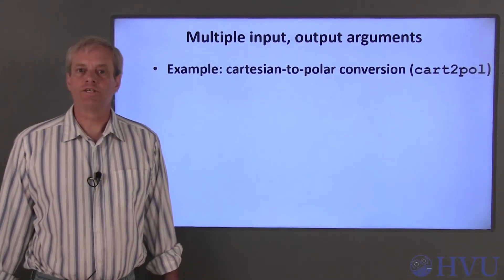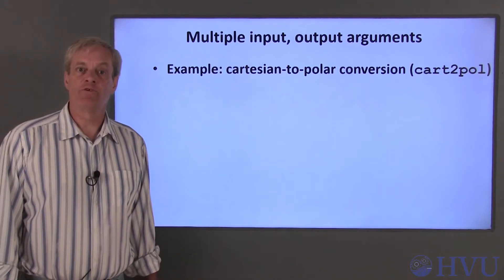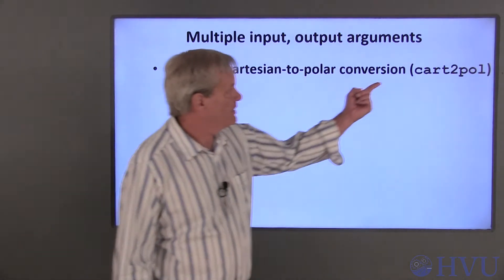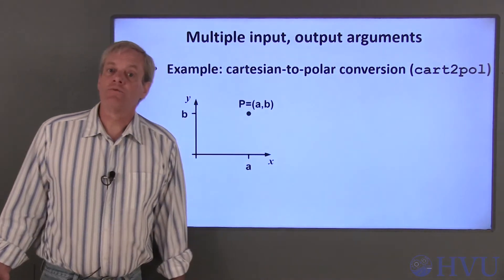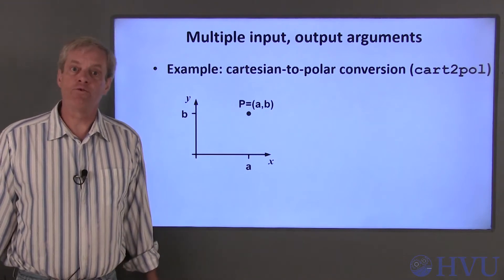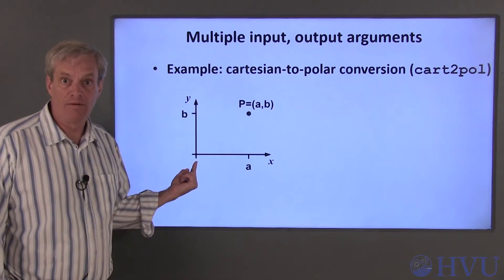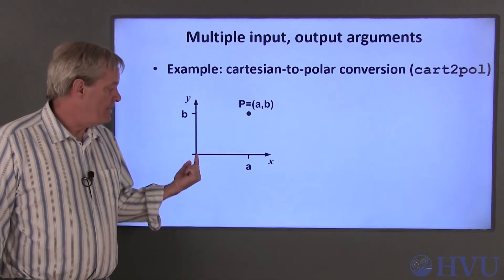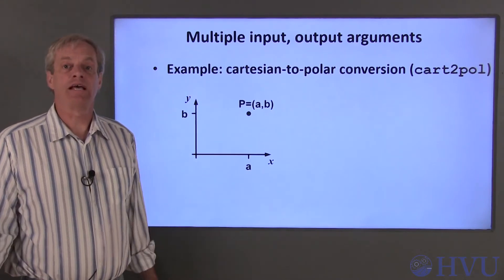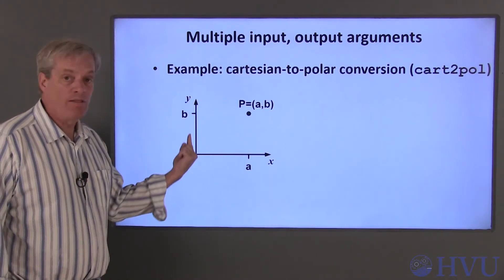Many Octave functions have more than one input or output arguments. We'll talk about multiple arguments in the context of converting a point from cartesian to polar coordinates. The Octave function to do this is cart2pol. Just to review, a point in two-dimensional space can be represented in several ways. One form is cartesian coordinates, which correspond to our usual xy axes. The distances from the origin in the x and y directions are represented as a pair of numbers. In our example, the point P is A units in the x direction and B units in the y direction.